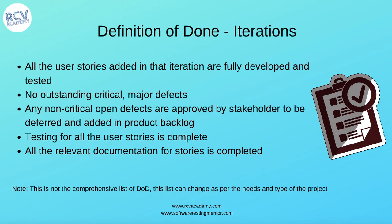Please note that these definition of done criteria for iterations are not a comprehensive list — this can change. These are key pointers for how to write the definition of done for iterations. You can correlate this with the exit criteria in traditional software development methodologies like waterfall: these are the key things that need to be completed before you can say a particular user story or work item has been done in the iteration. This list can be customized; points can be added or removed based on team discussion.